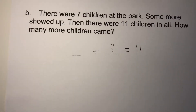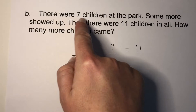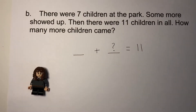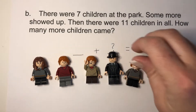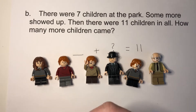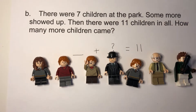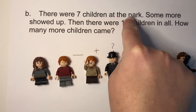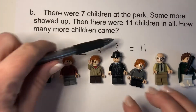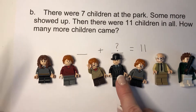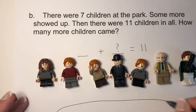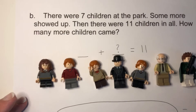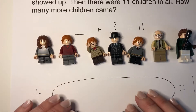Let's use our Lego figures to figure out how many more children came to the park. There were seven children at the park, so let's go ahead and put our seven. One, two, three, four, five, six, seven. So there were seven children at the park. I put a question mark here because we don't know how many children showed up. Then there were eleven children in all, so when we added some more children there was a total of eleven.